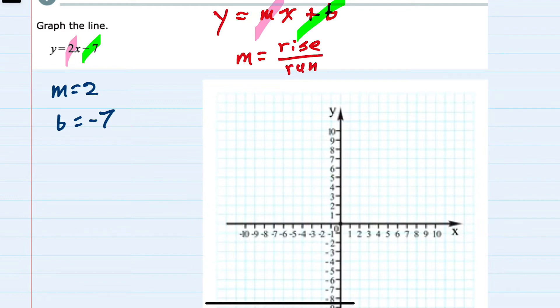And since we have the integer 2, I'm going to rewrite that as 2 over 1, where 2 is the rise and 1 is the run.